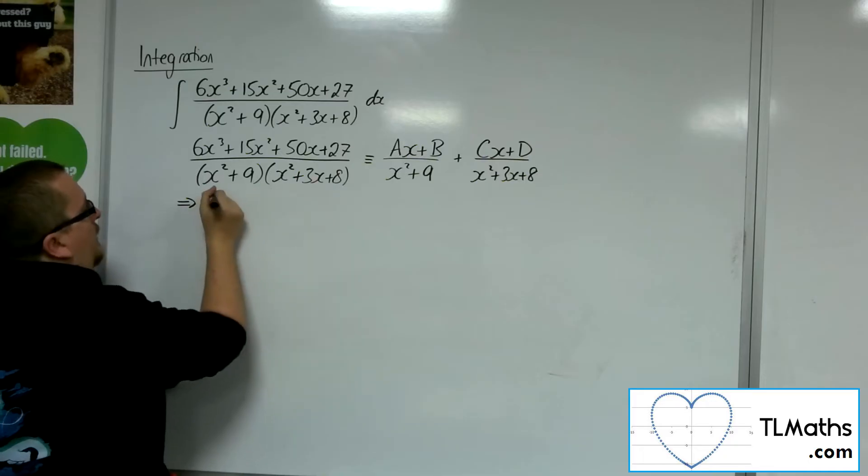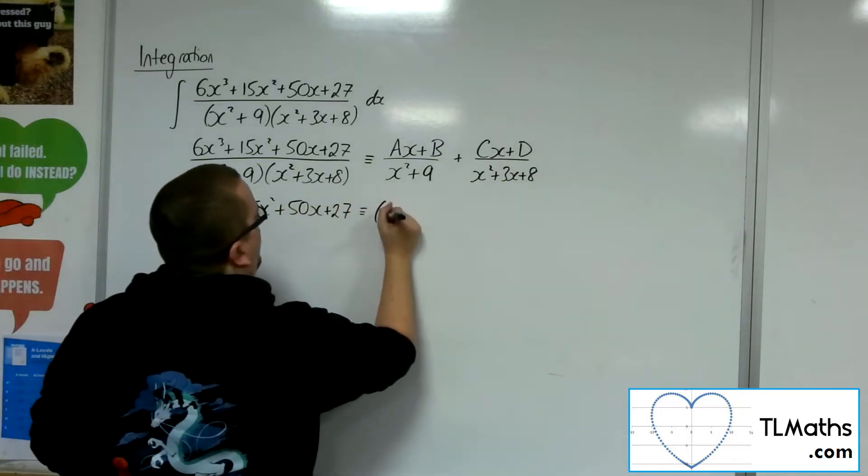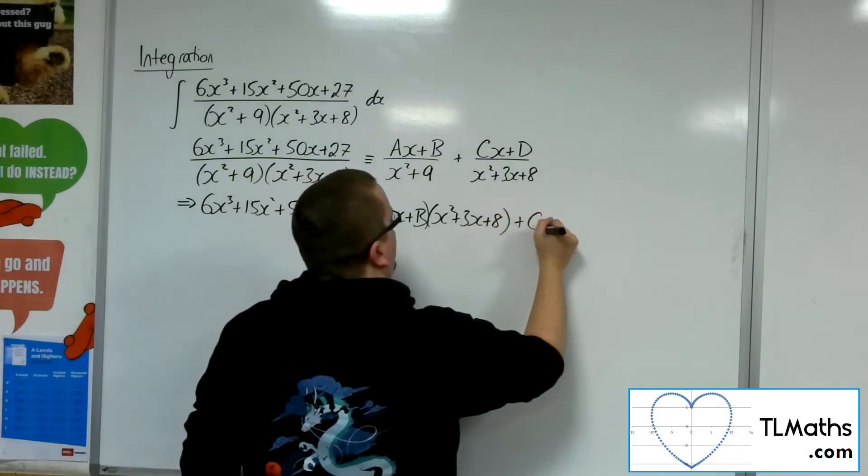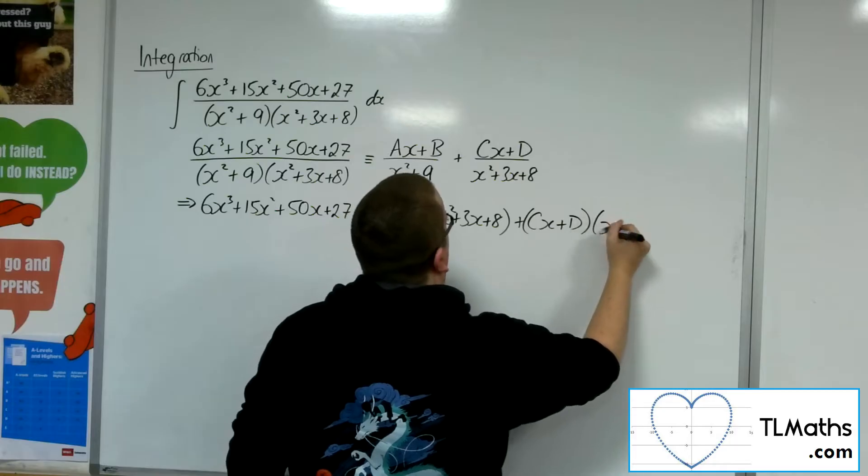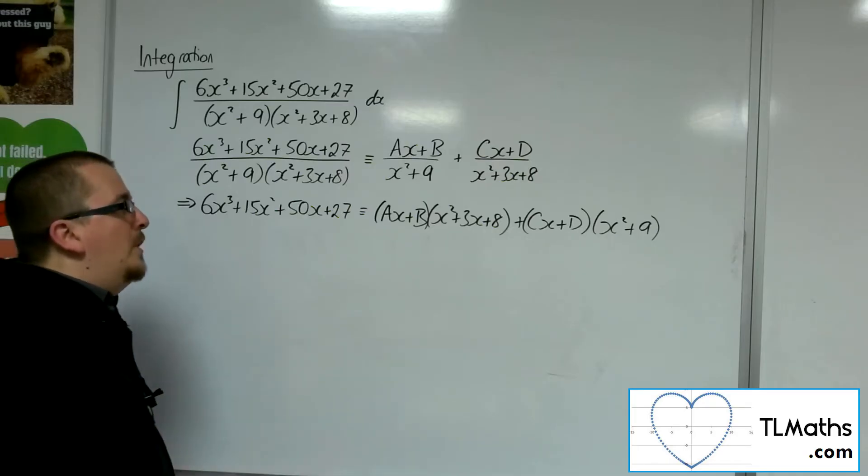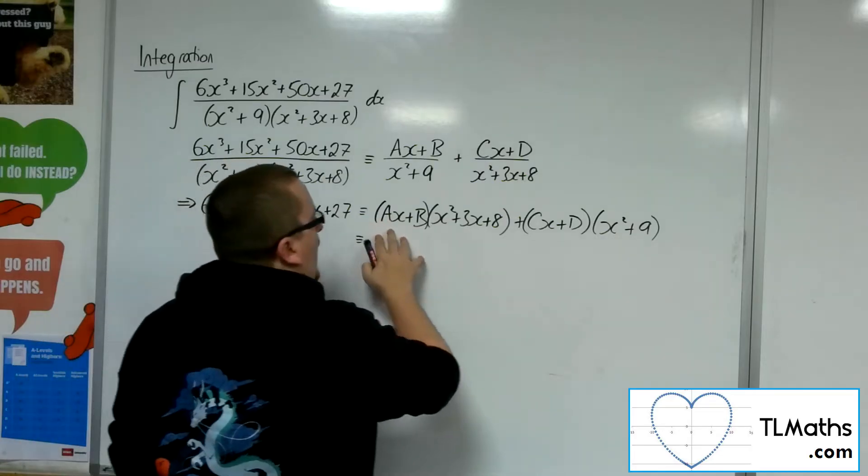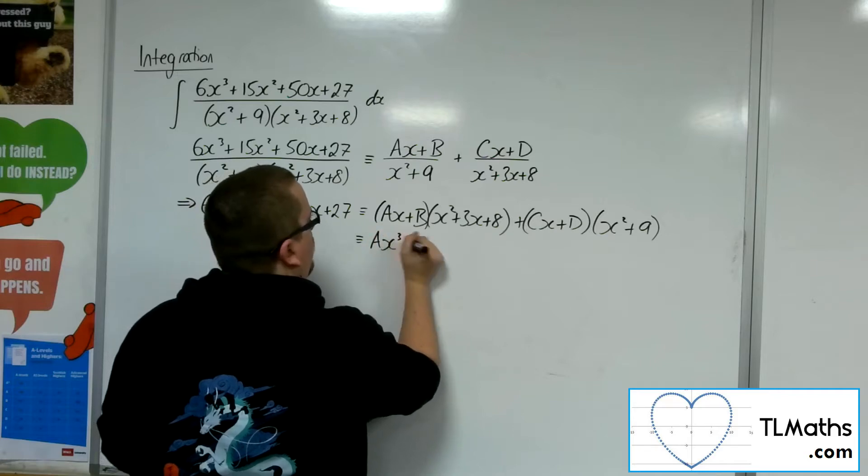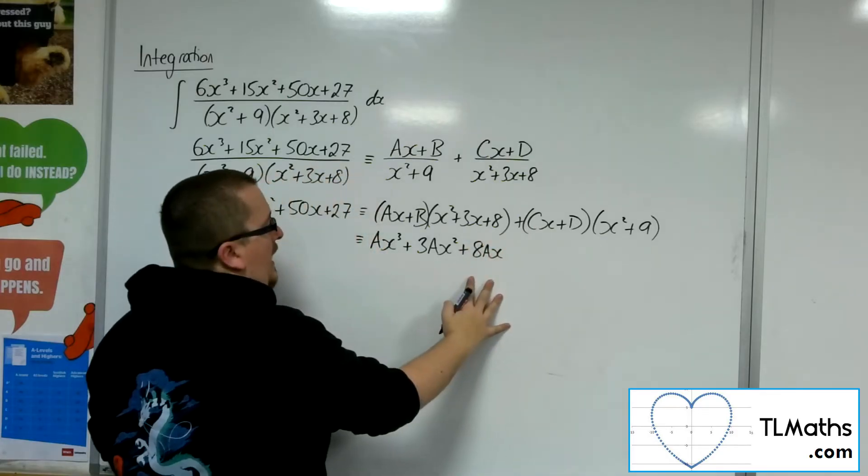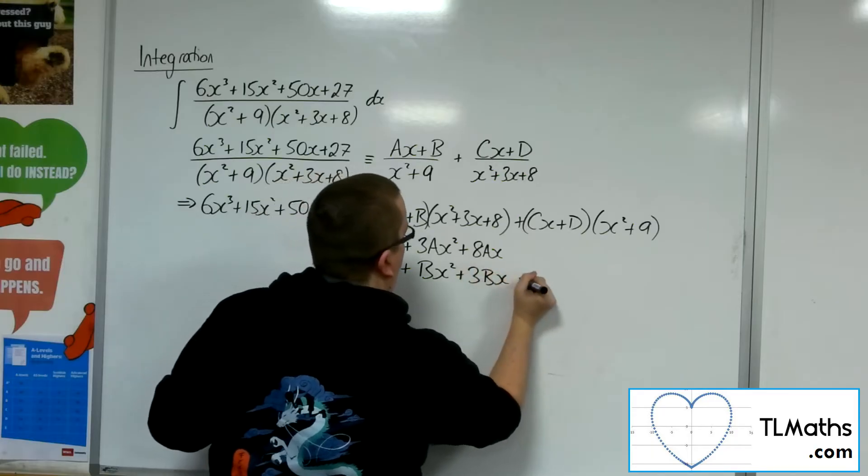So multiplying both sides by those brackets will get 6x cubed plus 15x squared plus 50x plus 27 is equivalent to ax plus b times x squared plus 3x plus 8 plus cx plus d lots of x squared plus 9. Okay, so from here I'm going to use a method called comparing coefficients. And what I need to do is to multiply out these brackets. So, ax times those three terms. We're going to have ax cubed plus 3ax squared plus 8ax. That's multiplying out the a's. Then we've got the b's. So we've got plus bx squared plus 3bx plus 8b.